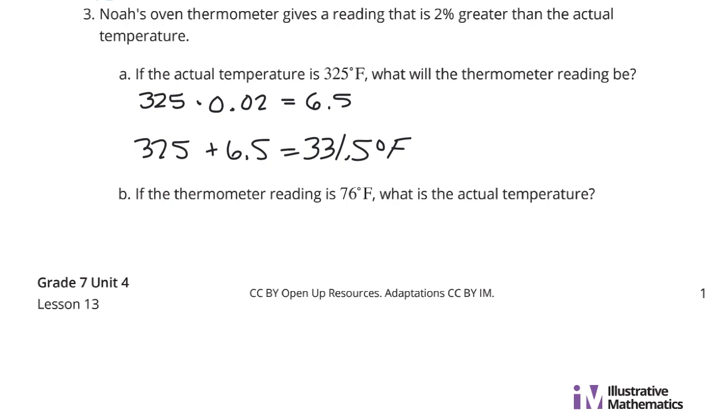And like in our previous problem, if we're 2% greater, that means we're looking at 102% of the actual temperature here. So I could take 325 and multiply by 1.02. And that too will get me 331.5 degrees Fahrenheit.